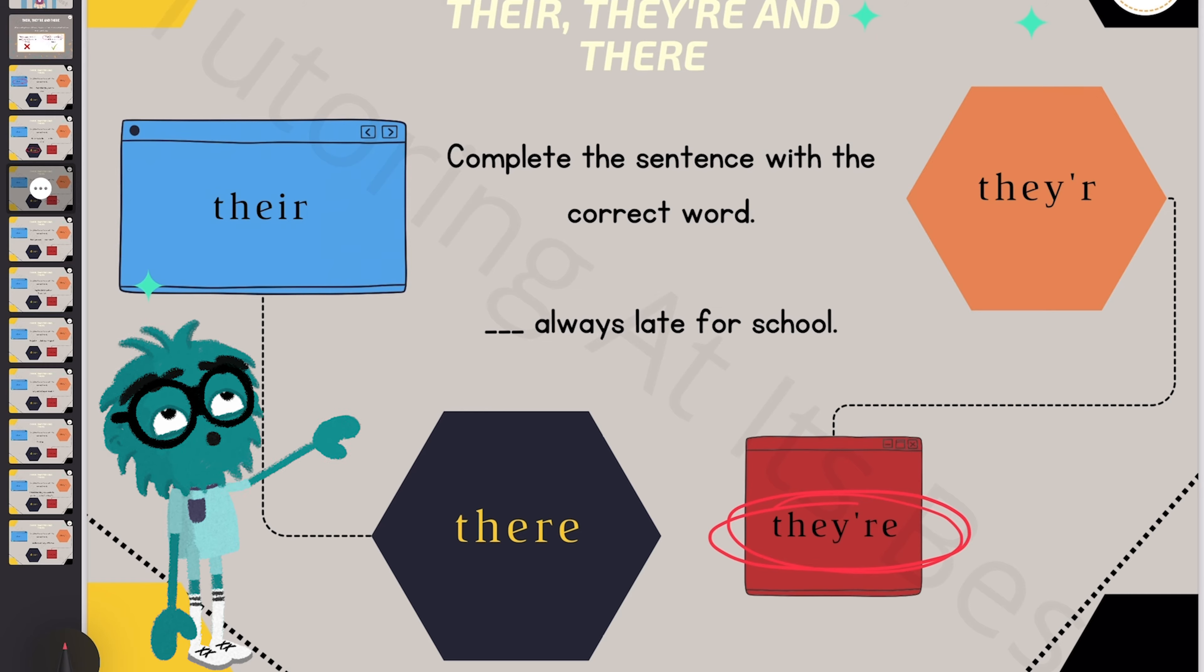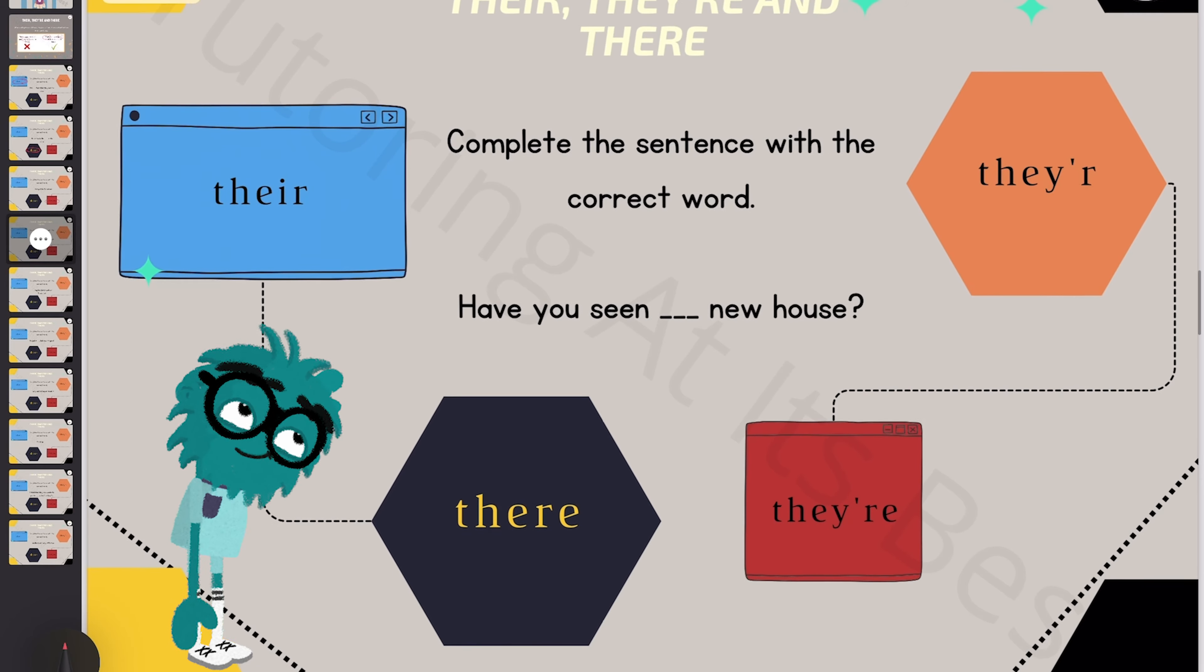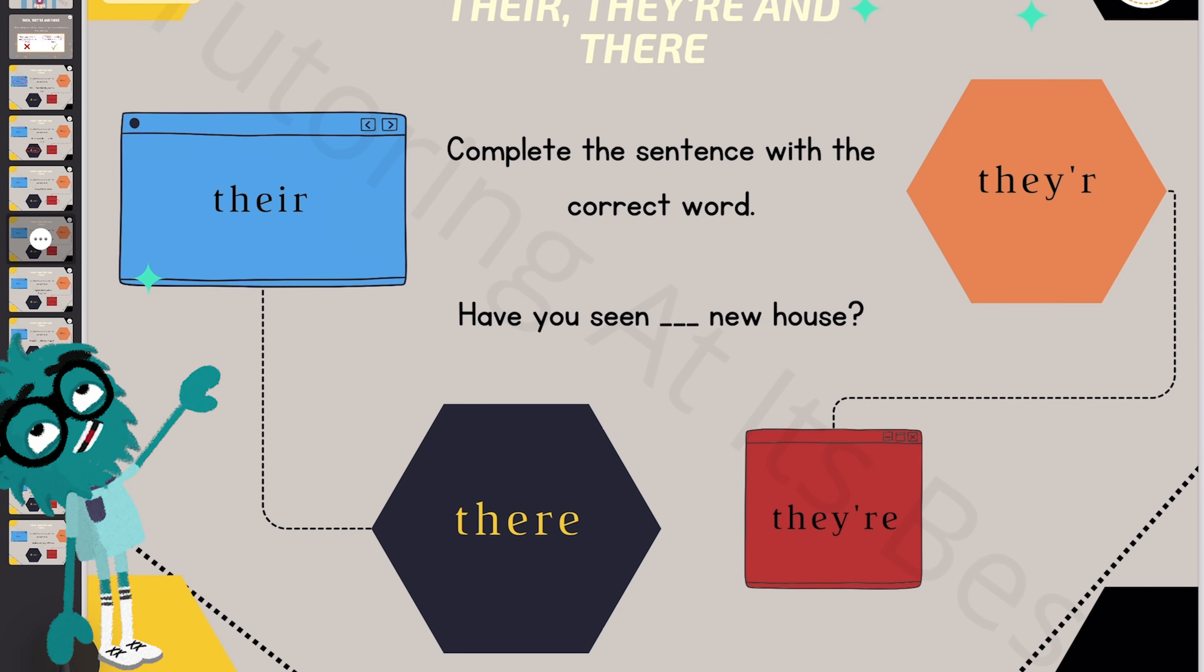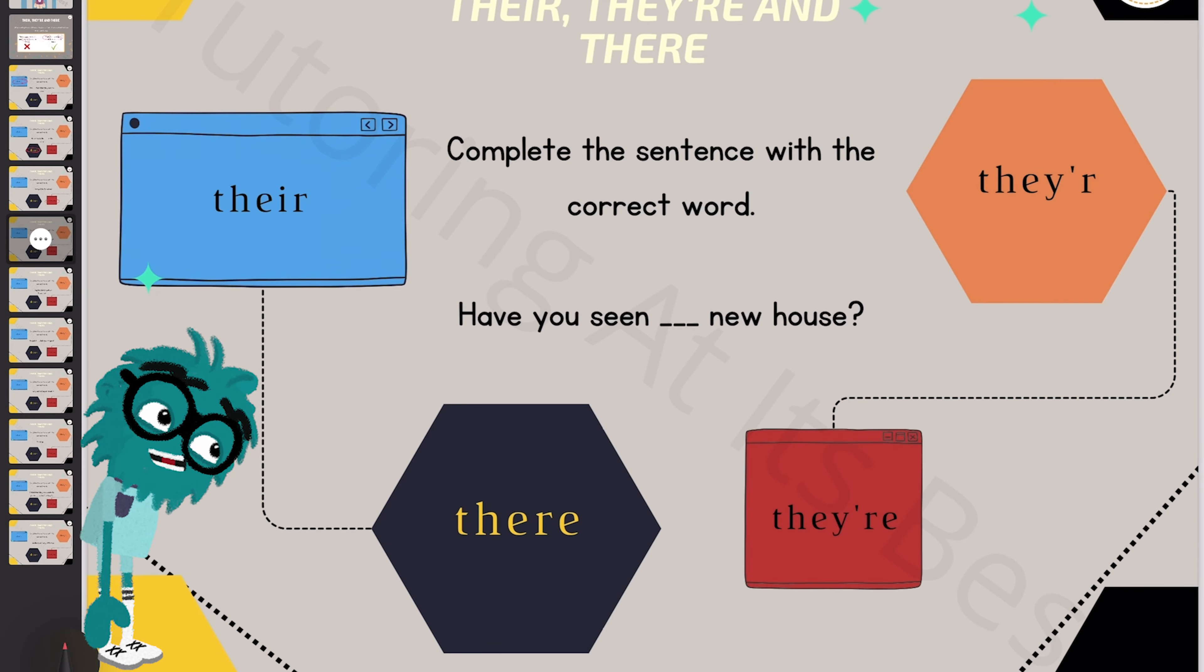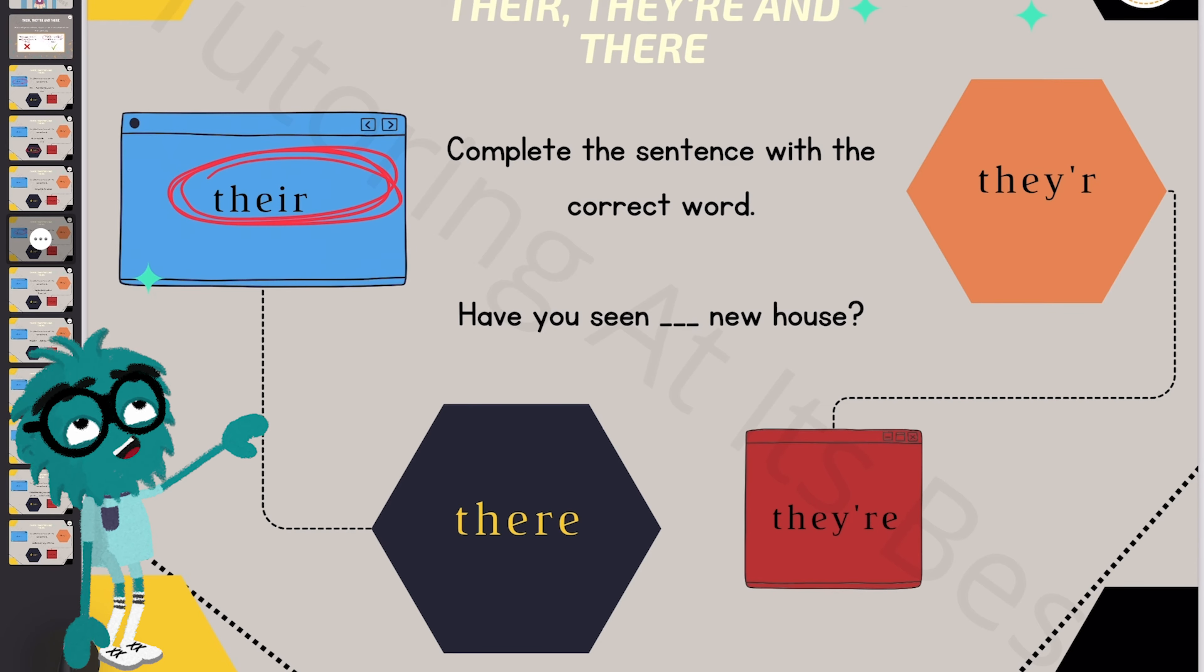So once again, let's go for the next question and let's revisit this. Have you seen their new house? So again, it's somebody's house, so it's possessive. So we will go for their.